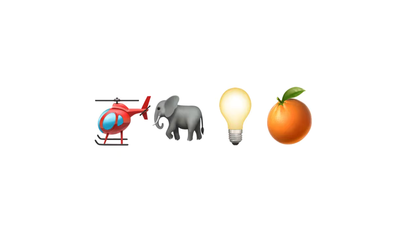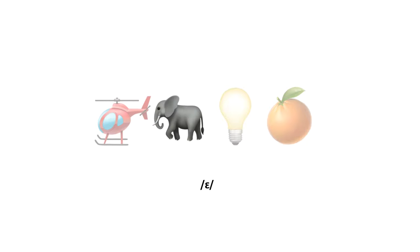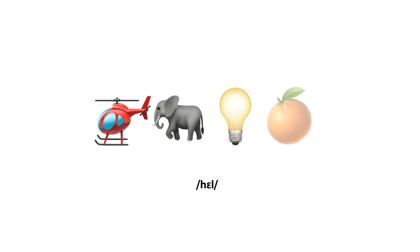Recall that because we used acrophony to define our alphabet, we can use the acrophonic principle to sound this out. The letter helicopter makes the sound H. The letter elephant makes the sound E. The letter light makes the sound L. And the letter orange makes the sound O. So let's sound out the word: hello.